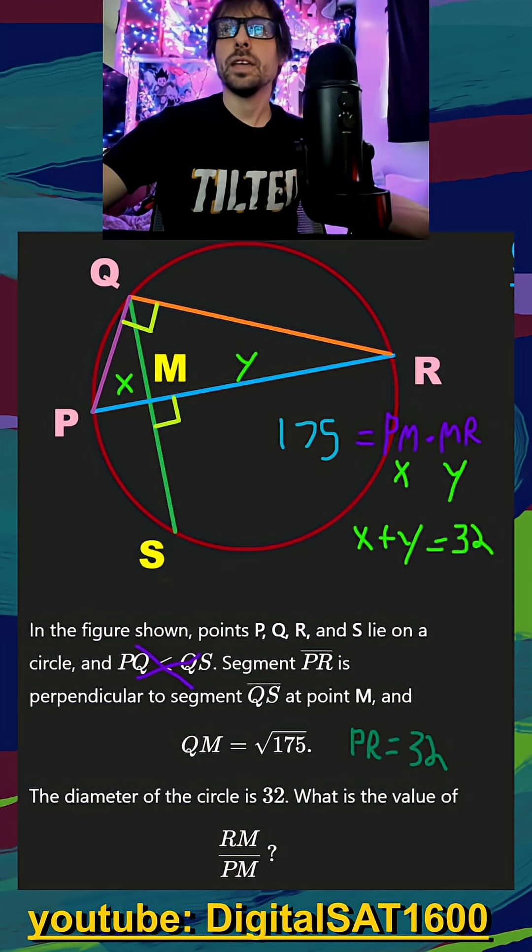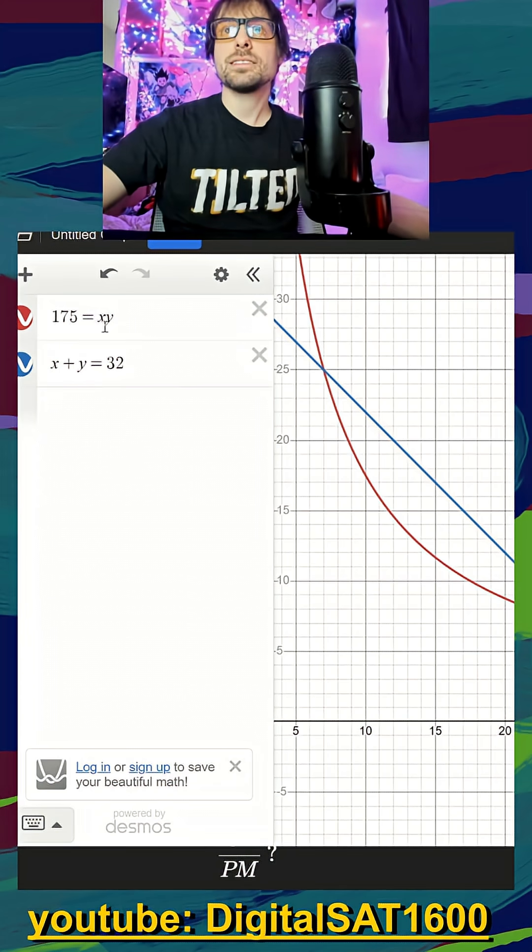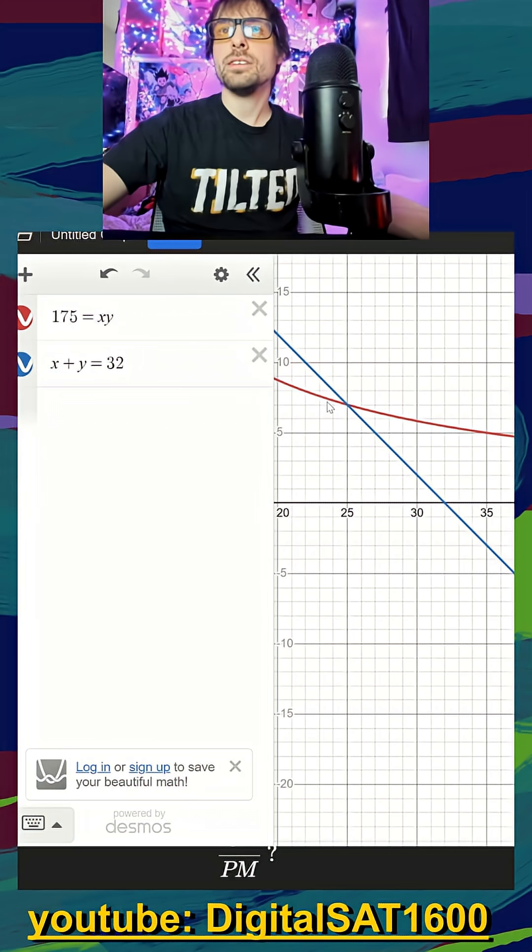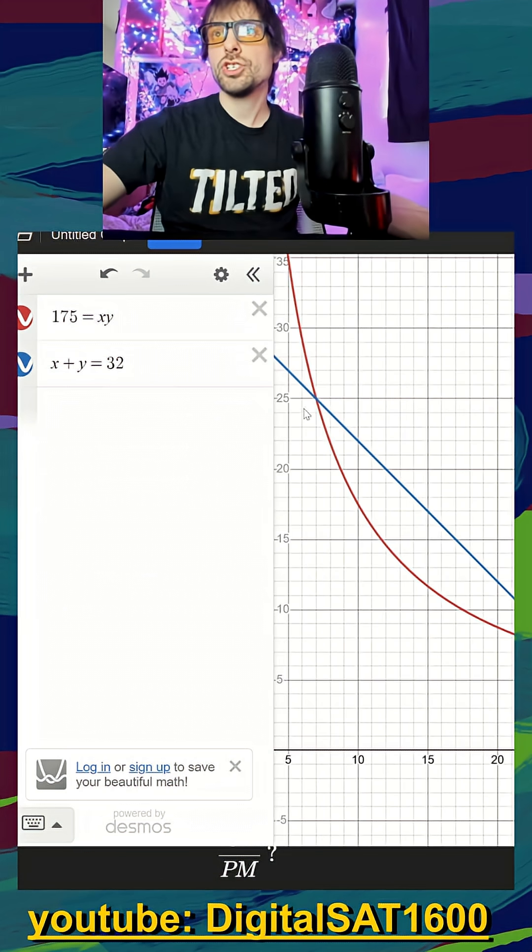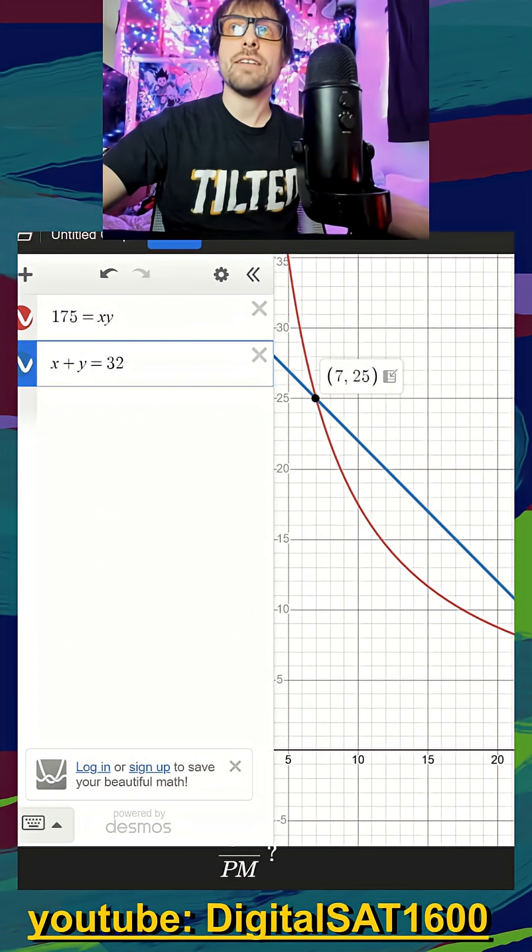So if I open up my Desmos here, and I plug in X times Y equals 175, and then X plus Y equals 32, you get two values here just because X and Y are interchangeable, but we can tell from our shape which one's which. I know that I'm going to be plugging in 7 and 25. So let's jump back to our worksheet.